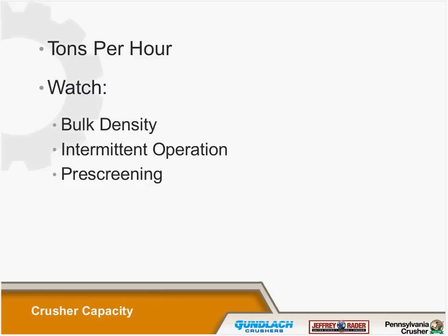On throughput — tons per hour or pounds per hour — it's important to know the bulk density of the material because this affects the volume the crusher needs to process. Crushers are both volumetric and power-related; we need the right power and a crusher large enough volumetrically to handle the throughput. We also need to know if it's going to be intermittent operation — sometimes it makes more sense to size a crusher to run four or five hours a day rather than try to do everything in one hour. The pre-screening discussion always comes into play when talking tons per hour.